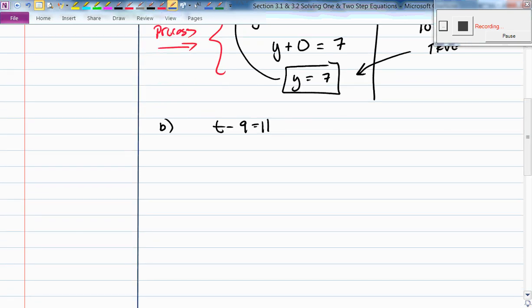It's a true statement. Therefore, I must have done it right. This is the process that we're trying to identify. Let's do another one together. Let's call this one B. What if I gave you t minus 9 equals 11?